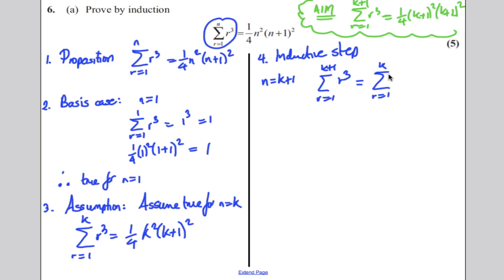So you're going to split it into the sum from 1 to K of R cubed plus the K plus 1th term, which would be what happens when you put K plus 1 in here and you get K plus 1 all cubed. Now, from your assumption step, this sum here is given by this formula. So this sum here is given by a quarter K squared times K plus 1 all squared. And we can add in our K plus 1 cubed as well.